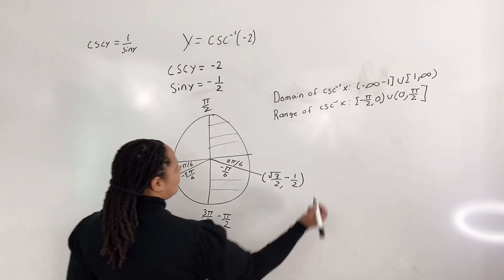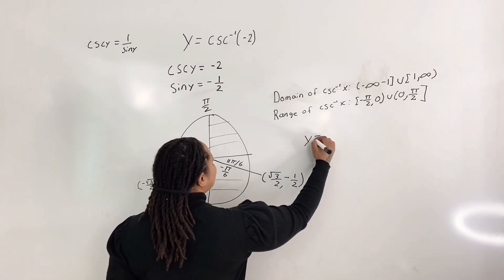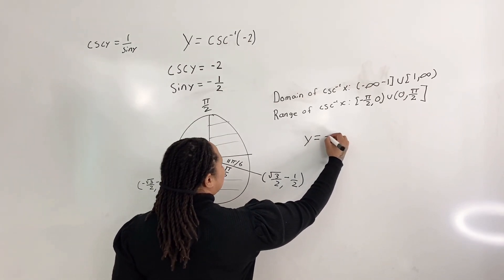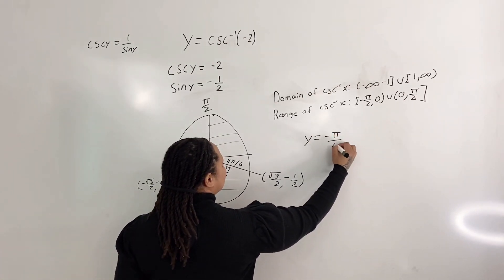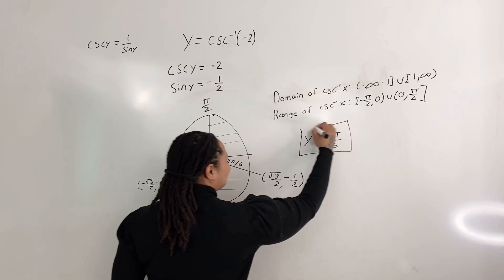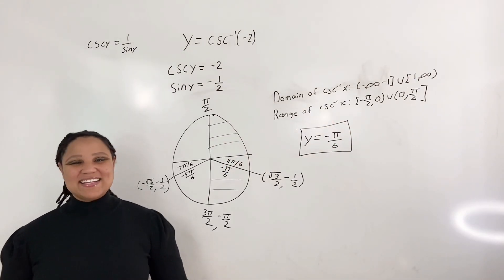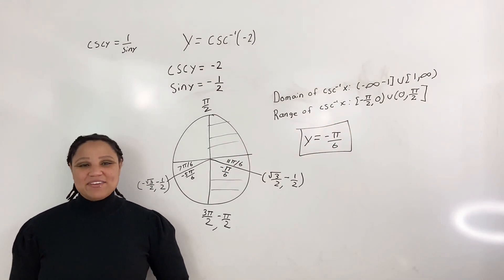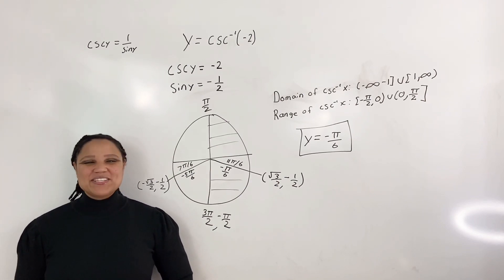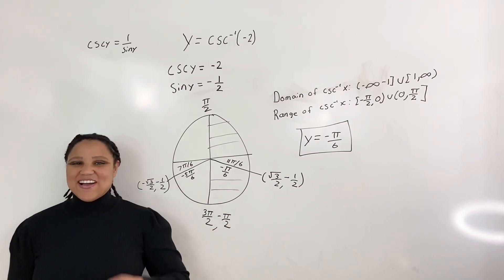So this means that our y is equal to negative pi over 6. And that is how you find the exact value of inverse cosecant. Thank you for watching and always remember that you are awesome.